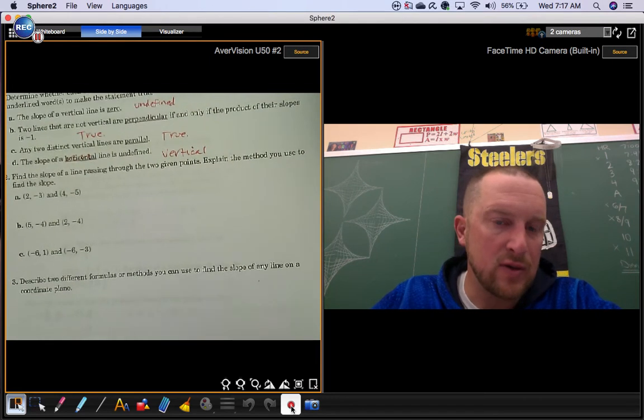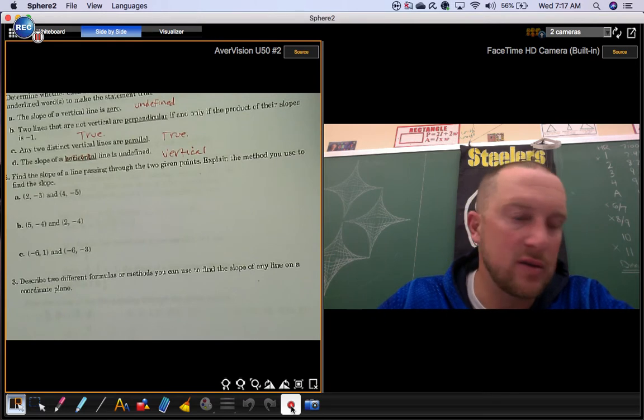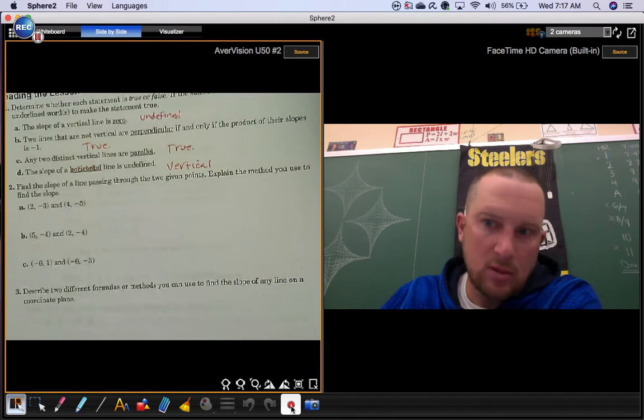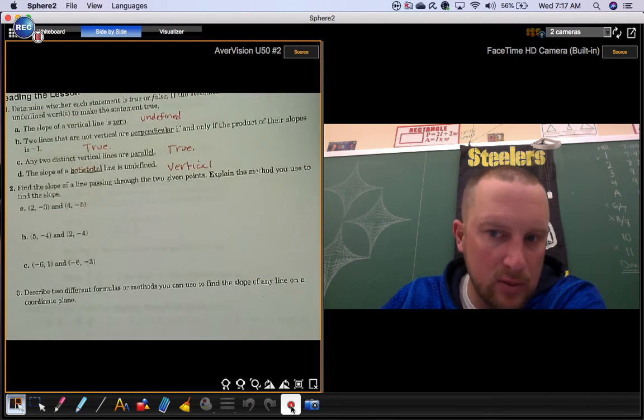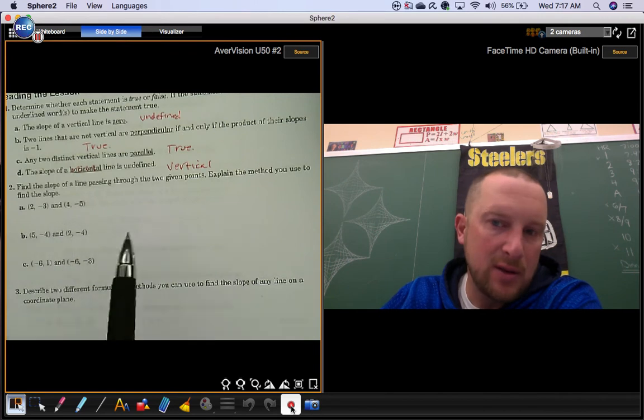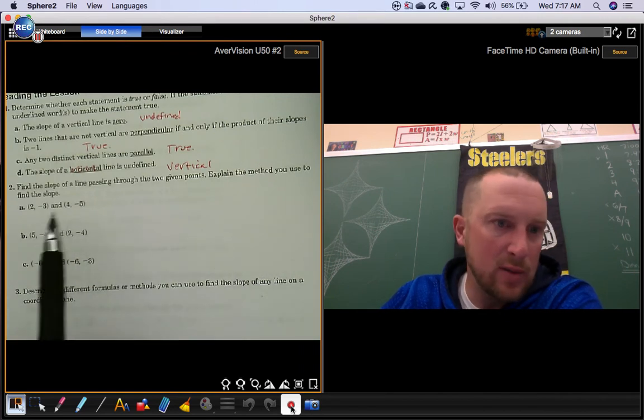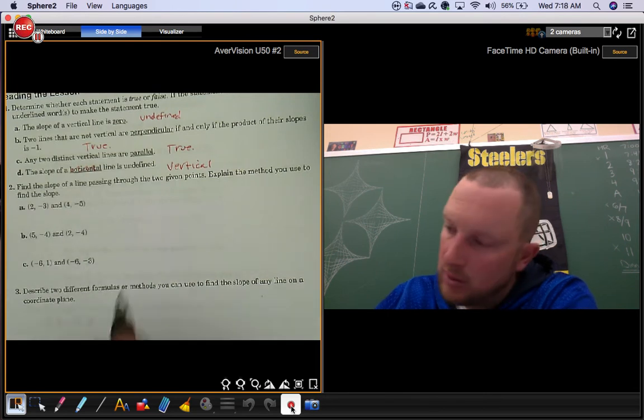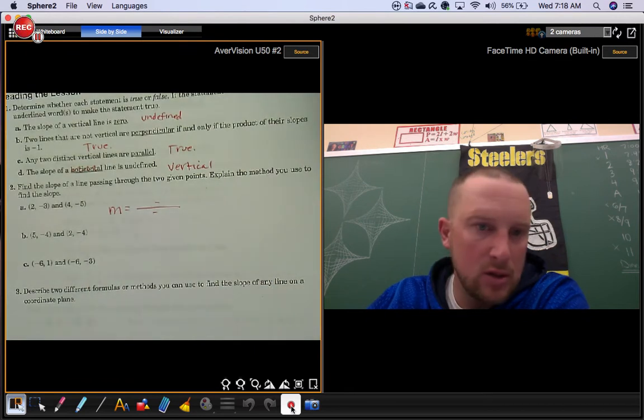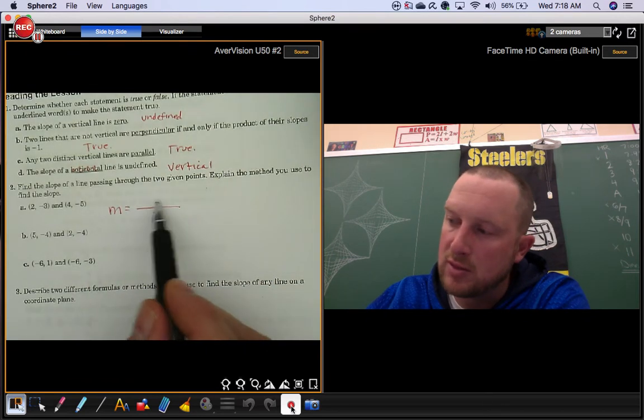Number two: Find the slope of a line passing through the given points. Explain the method you use to find the slope. Well, it's totally up to you whether you count or whether you use the formula. If they aren't graphed, typically I use the formula. I subtract and divide. If you wanted to plot these and count, you could.